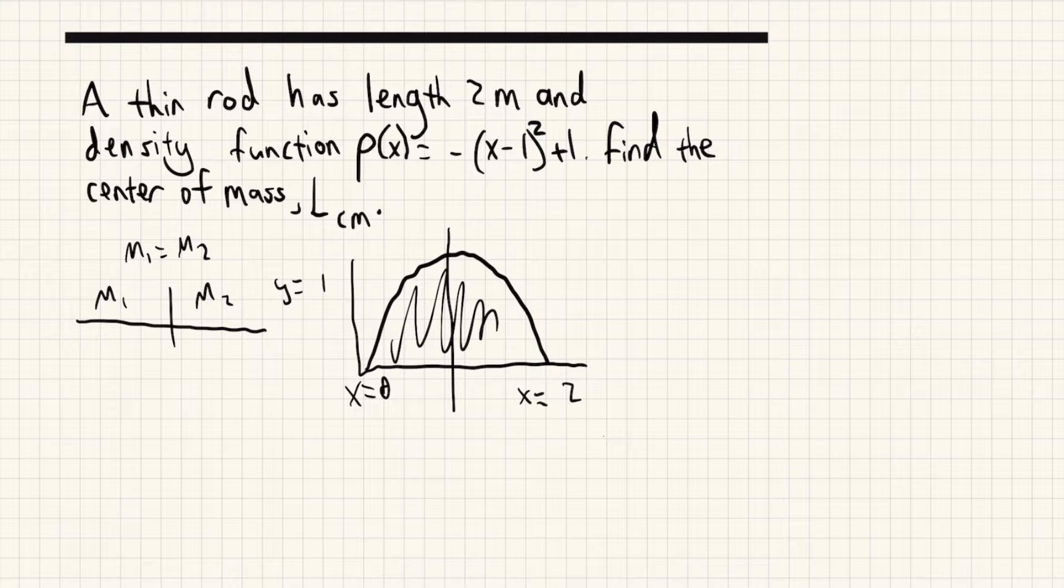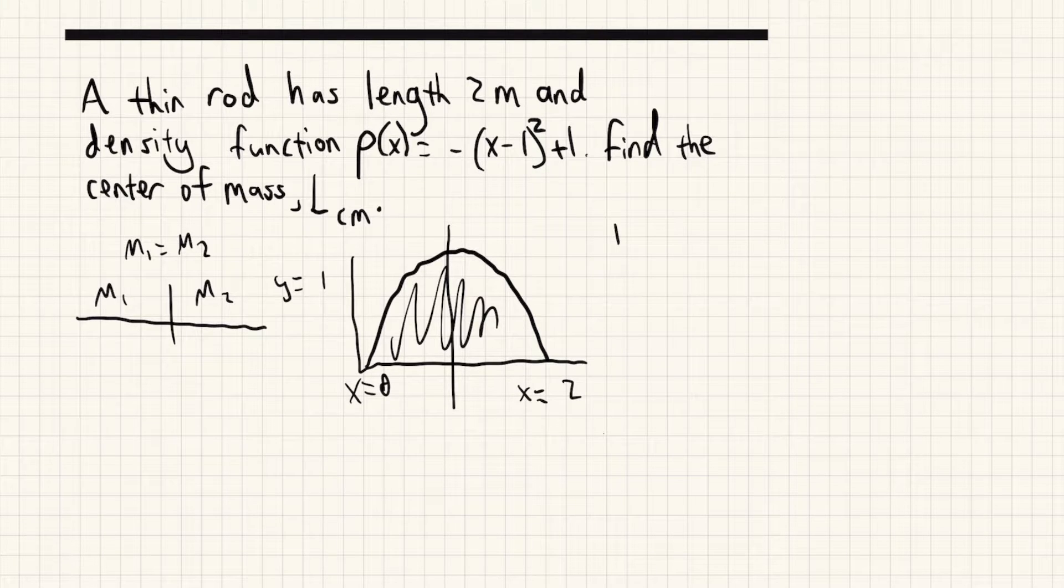Well, it turns out we could just use integrals. So the formula for center of mass is 1 divided by total mass of the object times the integral from 0 to the length of x times ρ(x) dx.